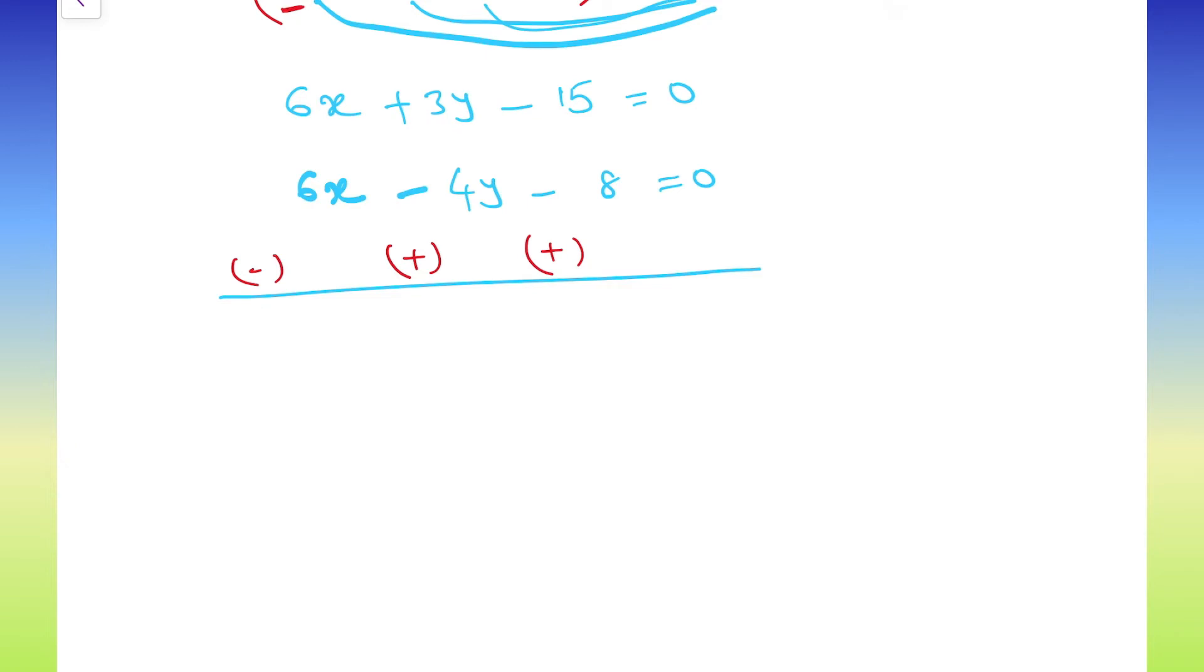Now, let us do cancellation of it. Plus 6x minus 6x cancel. Plus 3y plus 4y. 7y minus 15 plus 8 minus 7 equals to 0.